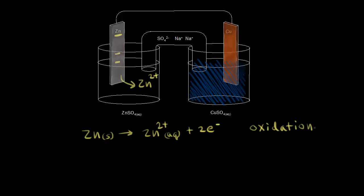You could also look at the oxidation states to confirm. Those two electrons that were lost travel along our wire, which constitutes our electric current.